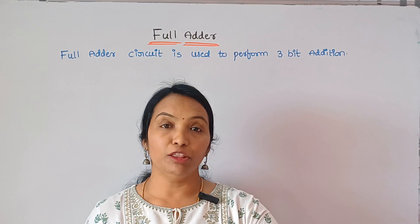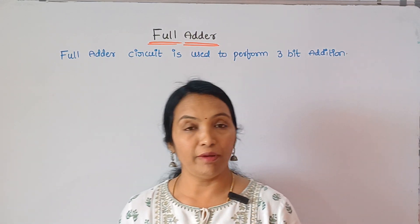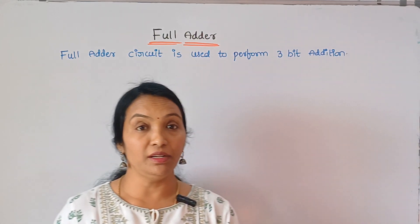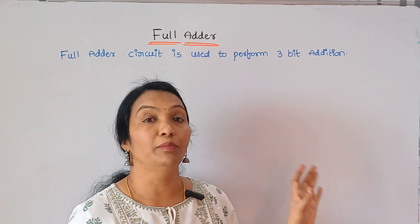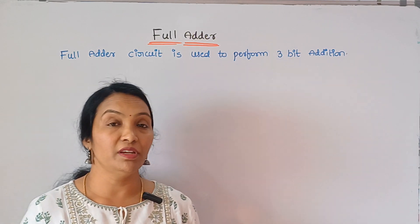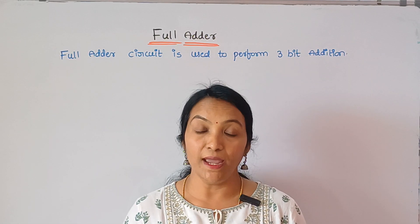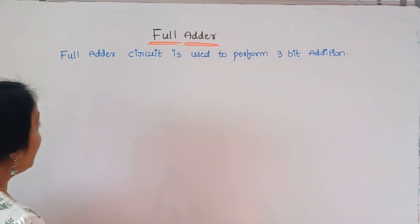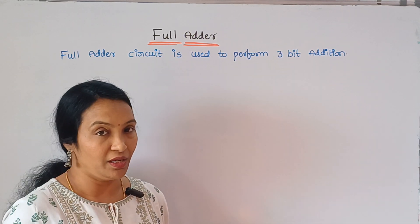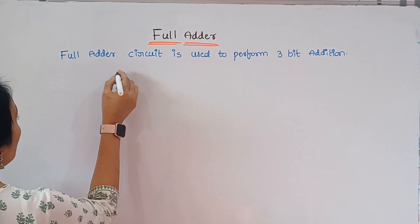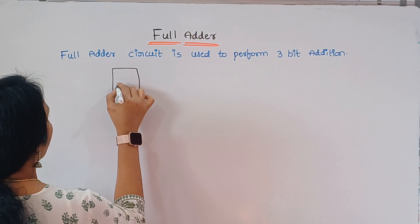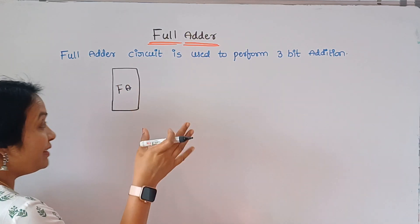If you choose a half adder, you can use it for two inputs and outputs. The truth table is based on the sum and carry by using K-map Boolean equation. Based upon the Boolean equation, we have to draw the full adder circuit. First of all, a full adder is a circuit used to perform 3-bit addition.